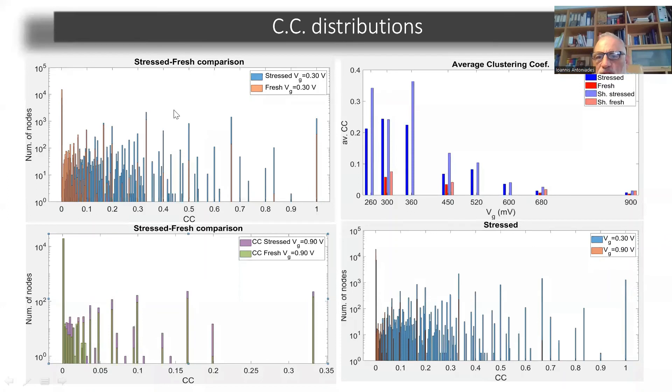Now on the upper right plot, you can see the average clustering coefficient as a function of the gate voltage. You clearly see that as the gate voltage increases, the average clustering drops for both the fresh and the stressed transistors.